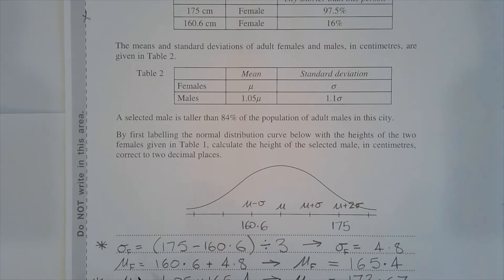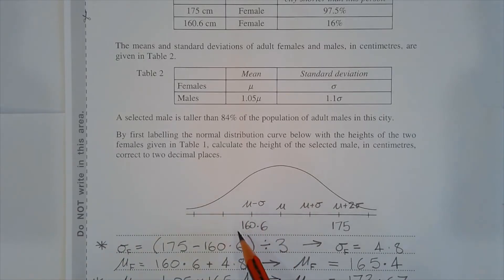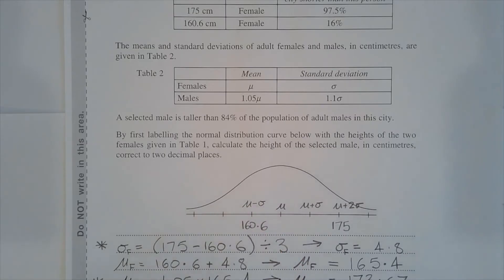Mu f, or the mean of the female population, can be found by taking 160.6 and adding one standard deviation to that value. So 160.6 plus 4.8 is equal to 165.4 centimetres.